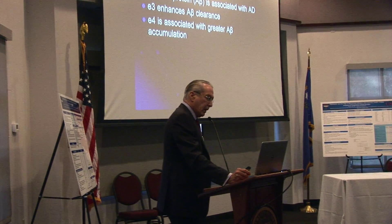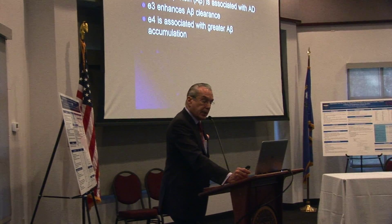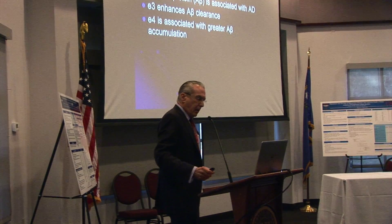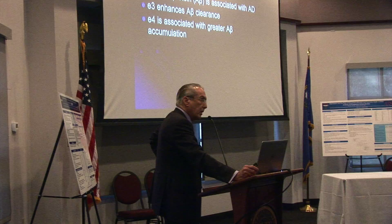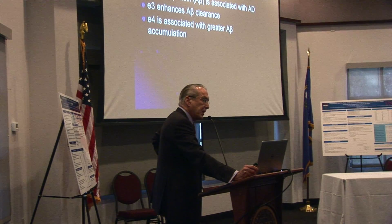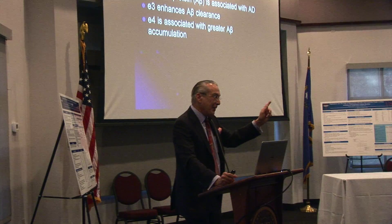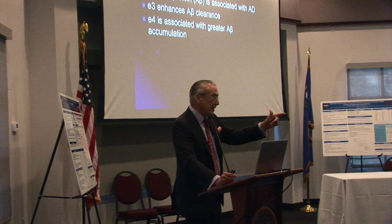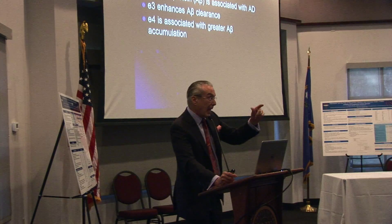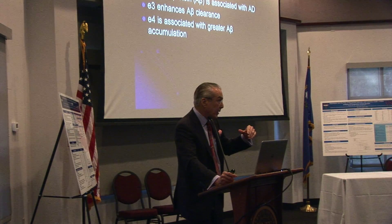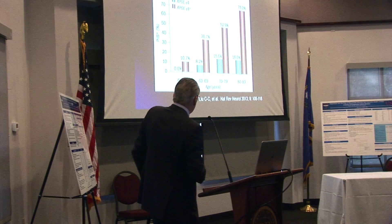So why is E4 a problem in Alzheimer's disease? We know that amyloid beta protein is associated with AD. E3 enhances amyloid beta clearance — so if you have E3, you're more efficiently clearing amyloid out of your brain. Right now you're making amyloid, and if you're getting it out of your brain, you're less likely to get Alzheimer's disease. But if it's being trapped in your brain because you're an E4 carrier, it accumulates into plaques. You can handle that while you're young, but not while you're old. So E4 is associated with greater amyloid beta accumulation.